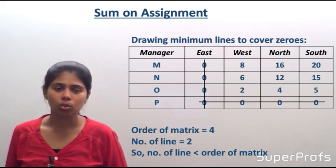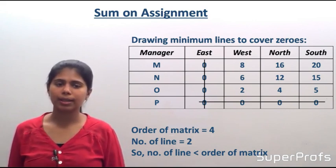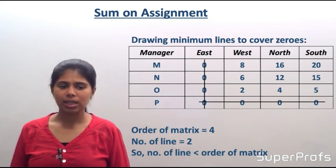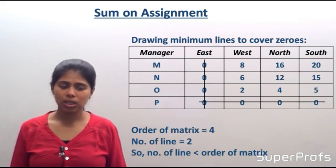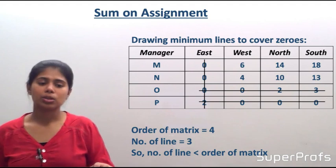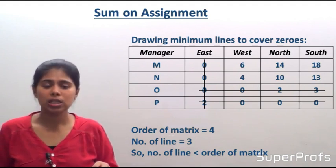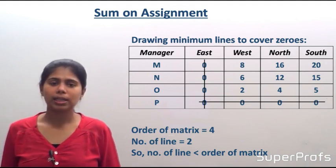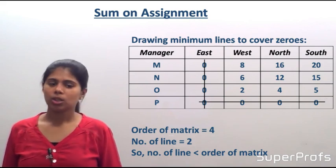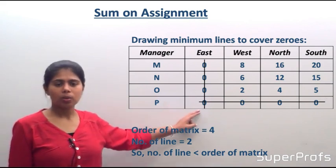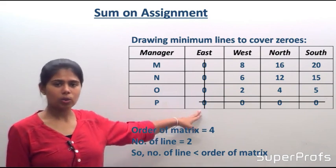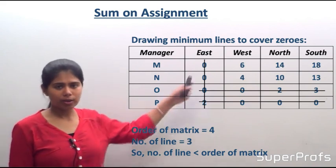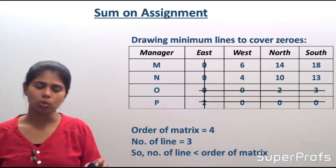With LOE = 2, we subtract 2 from all open (uncovered) elements: 8−2=6, 16−2=14, and so on, getting values 6, 14, 18, 4, 10, 13, 0, 2, 3. At the intersection of the two lines, we add LOE: 0+2=2. This gives us the updated matrix after the first LOE operation.